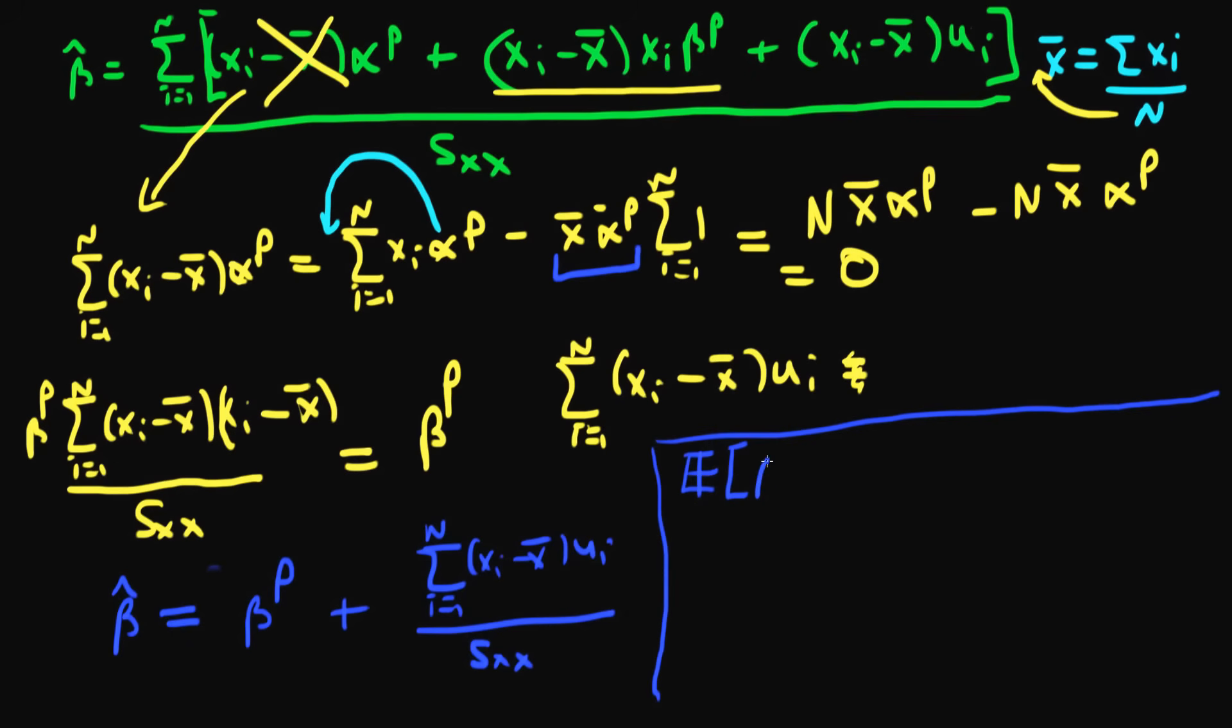We have that the expectation of beta hat is equal to, well, the expectation of b2p is just b2p, because it's just a number, a number doesn't have any sort of, it's not a random variable, it's just always equal to what it is, b2p, plus, and we can now write this as a right-hand side term as being equal to the sum of i equals 1 to n of the expectation of xi minus x-bar times ui, all divided by sxx, because sxx is just a number, it just contains x terms, so we already know that.